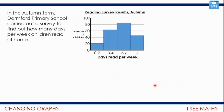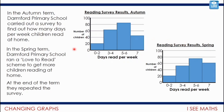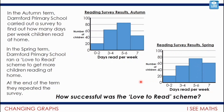Now we're going to have a look at our first changing graph. In the autumn term, Darmford Primary School carried out a survey to find how many days per week children read at home. This graph shows what they discovered — children that read 0 to 2 days, 3 to 4 days a week, 5 to 6 days, and those who read every day. Then in the spring term, Darmford Primary School ran a love to read scheme with the aim of getting more children reading at home. At the end of the term they repeated the survey. Your task: how successful was the love to read scheme? What's the same and what's different about these results?